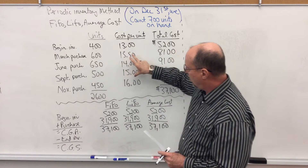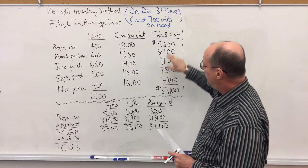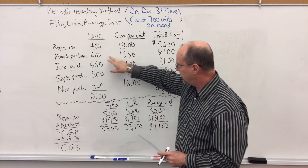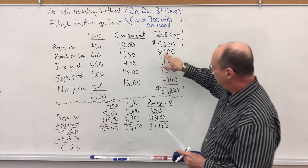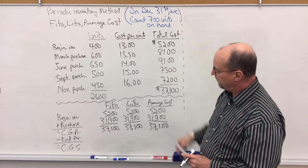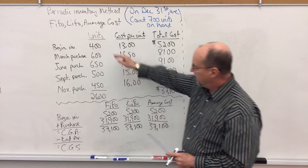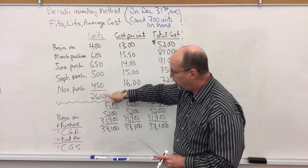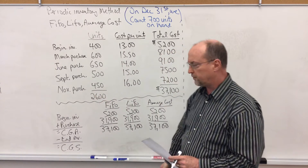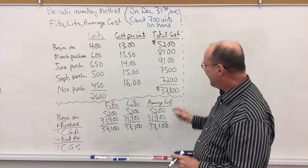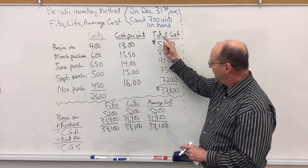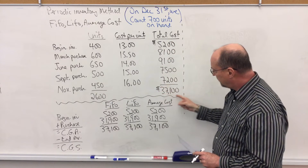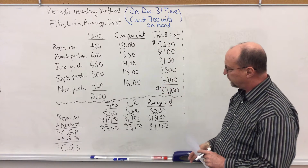These are the units, the cost per unit, and this is the total dollar amount — 600 times $13.50 is $810, and so on. Beginning inventory plus purchases equals the total units available for sale, and the dollar amounts here represent cost of goods available for sale.